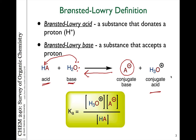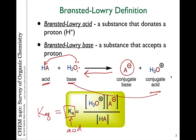The initial base becomes the conjugate acid when it's protonated. This equilibrium is described by an equilibrium constant — specifically the Ka, or acidity constant. This equilibrium depends on the concentration of the products over the reactants: the concentration of hydronium ion and A⁻ over the acid concentration.